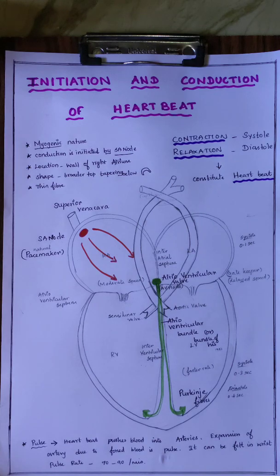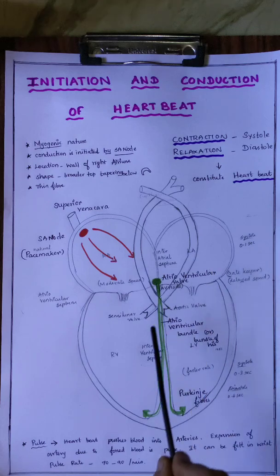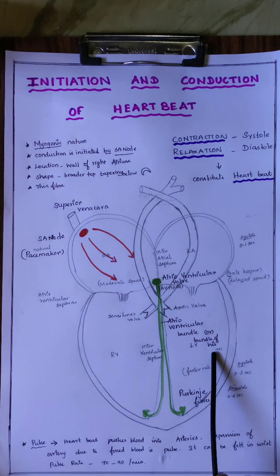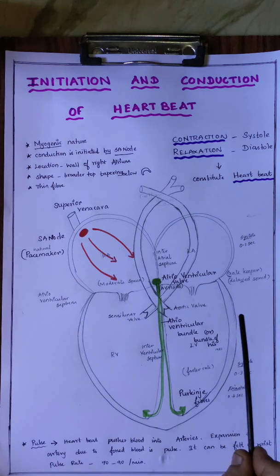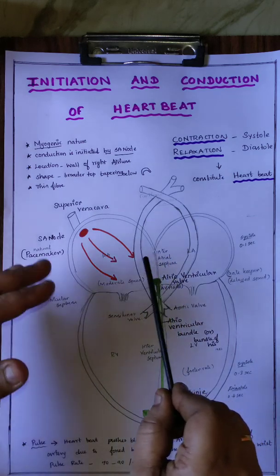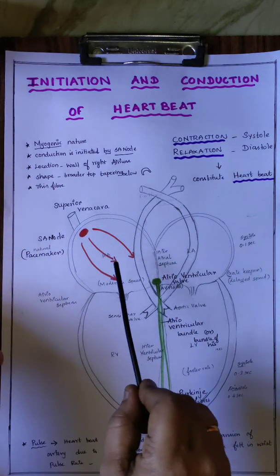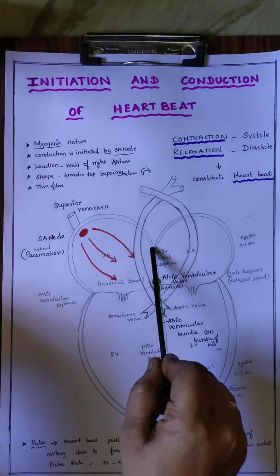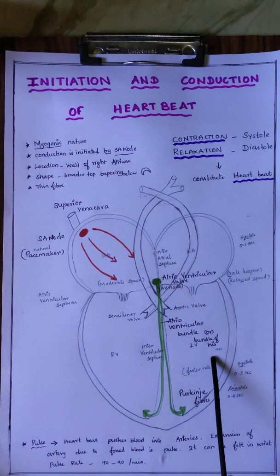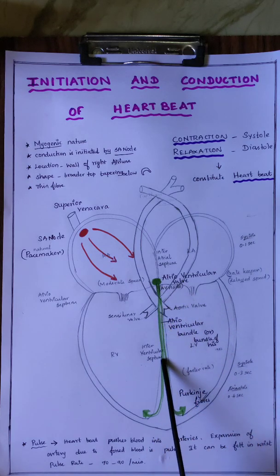Let me recall some important terms of the heart which are helpful for today's topic. The heart has four chambers: right atrium, left atrium, right ventricle, and left ventricle. It has three kinds of septum. The right atrium and left atrium are separated by the inter-atrial septum, and the right ventricle and left ventricle are separated by the inter-ventricular septum.